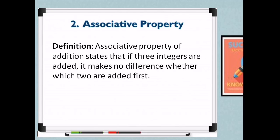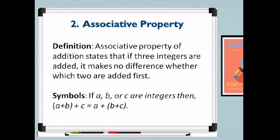Number 2: associative property. Associative property of addition states that if three integers are added, it makes no difference which two are added first. There is an association of integers — you have three integers to add and there is no difference whether which two are added first. In symbols: if a, b, and c are integers, then the quantity a plus b, plus c equals a plus the quantity b plus c.